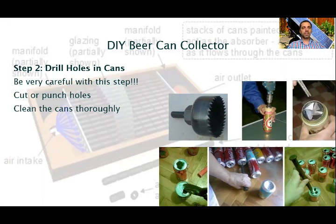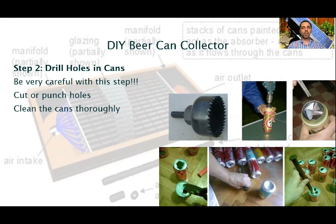When you have the desired amount of empty cans, you need to drill holes in the cans. Be very careful with these steps — the edges of the cans are really dangerous. There are different methods to do that: cut or punch holes. My opinion is that punching the holes is the easiest way. The shape of the bottom hole is in the form of a star. It has the task of providing turbulent airflow, which will enhance heat transfer from the can wall to the passing air. Also really important: you need to clean the cans immediately, because they are very greasy, and the warm air would be really smelly.